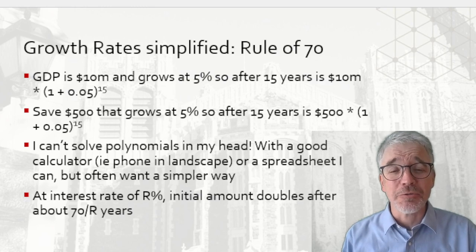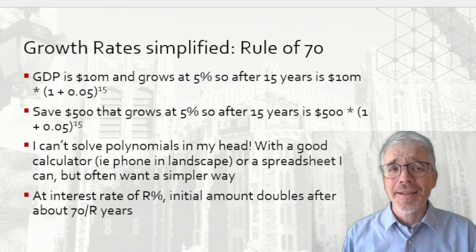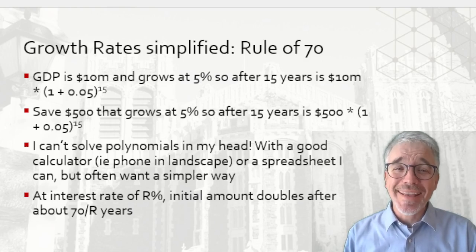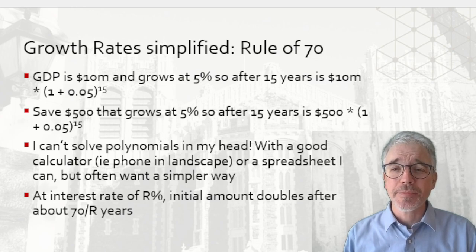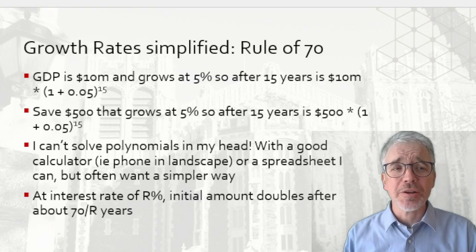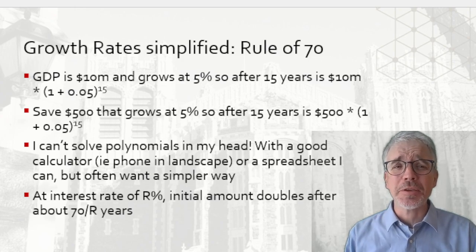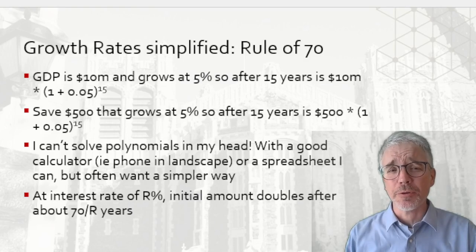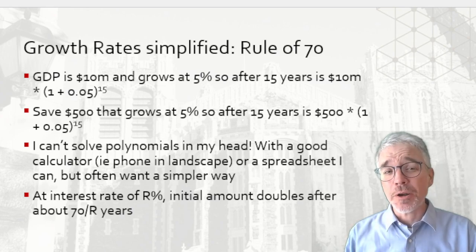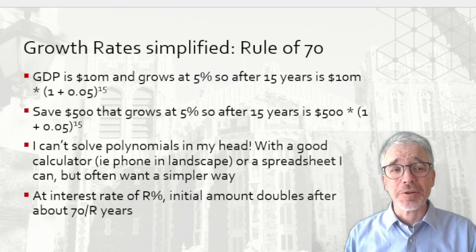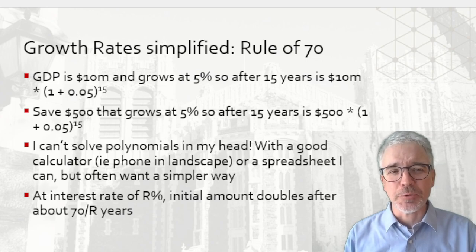And if that's too much calculation for you, and honestly, I can't do powers in my head, most people cannot, you might want a simple approximation that you can do in your head just to be able to think a problem through and even in a very approximate way. That's the rule of 70. Earlier, I wanted to figure out how GDP would grow after 15 years. That's $10 million times (1 + 0.05) to the 15th power. I cannot do those polynomials in my head. If I want to do that in a calculator, I turn my phone into landscape mode. You do it in a spreadsheet. There are a lot of options, but you might want a simpler way, and that's the rule of 70.